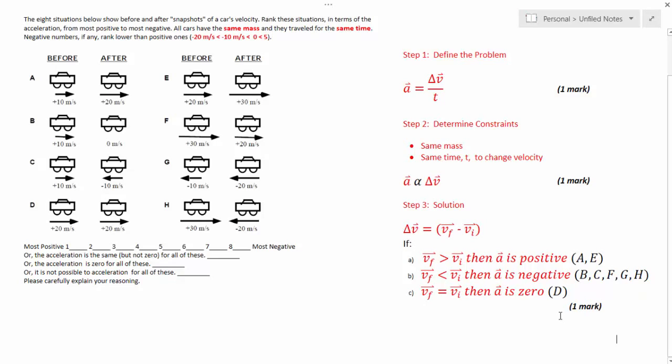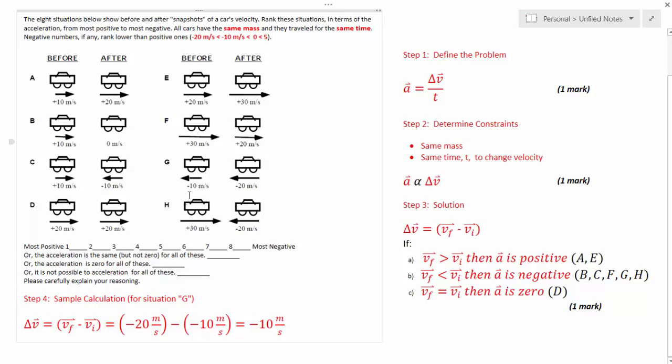For the last point, all you need to do is show one sample calculation. Pick one that's reasonably challenging and then rank your question accordingly. So you can see on the lower left, my step four, my sample calculation, I've chosen image g.